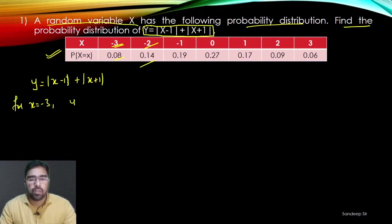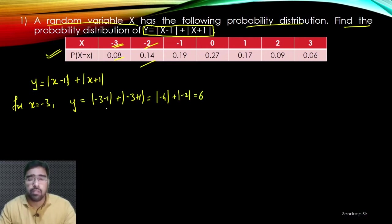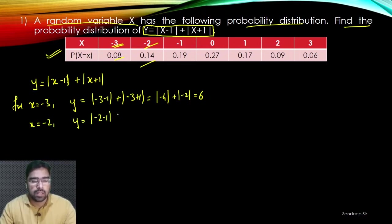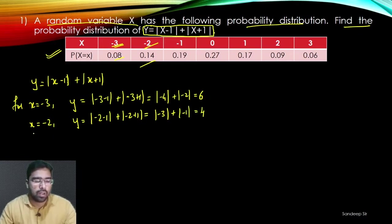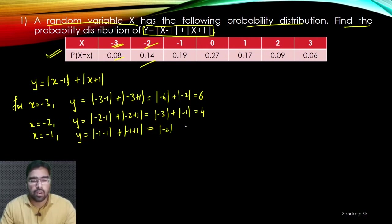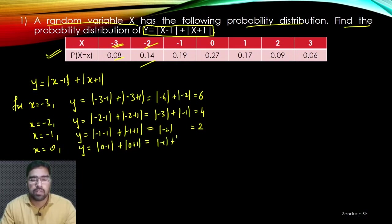For X = minus 3: Y = |−3 − 1| + |−3 + 1| = |−4| + |−2| = 4 + 2 = 6. For X = minus 2: Y = |−2 − 1| + |−2 + 1| = |−3| + |−1| = 3 + 1 = 4. For X = minus 1: Y = |−1 − 1| + |−1 + 1| = |−2| + 0 = 2. For X = 0: Y = |0 − 1| + |0 + 1| = 1 + 1 = 2.